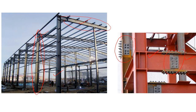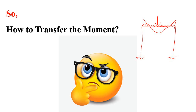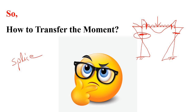The topic of this video is how the moment in this connection is transferred from one part to the other part. Let's say you are supposed to use a splice at a given location on a beam. Looking at the bending moment diagram for a portal frame with some UDL and point load, each splice location will have some amount of bending moment, and when you design the splice you have to account for this bending moment.